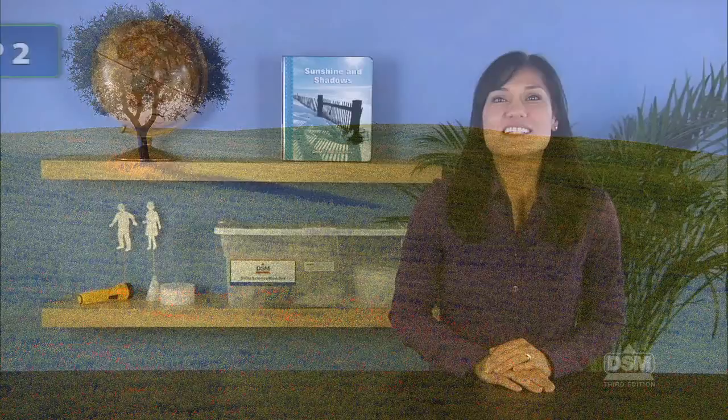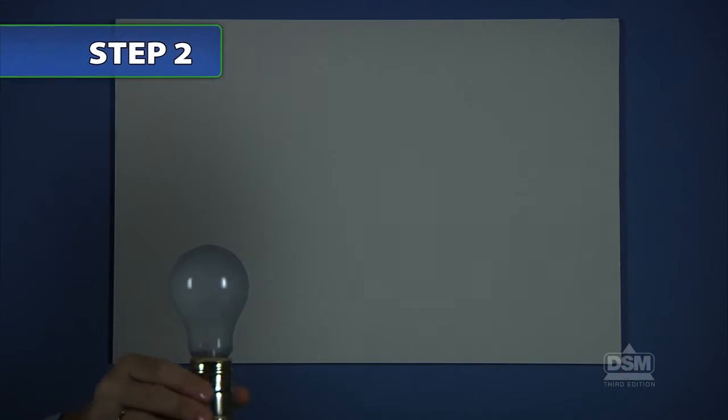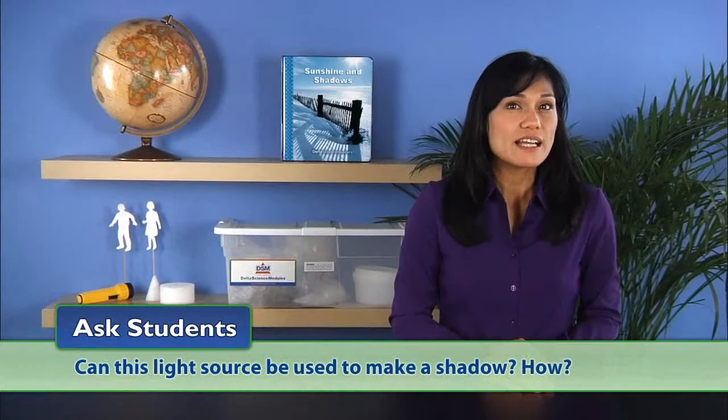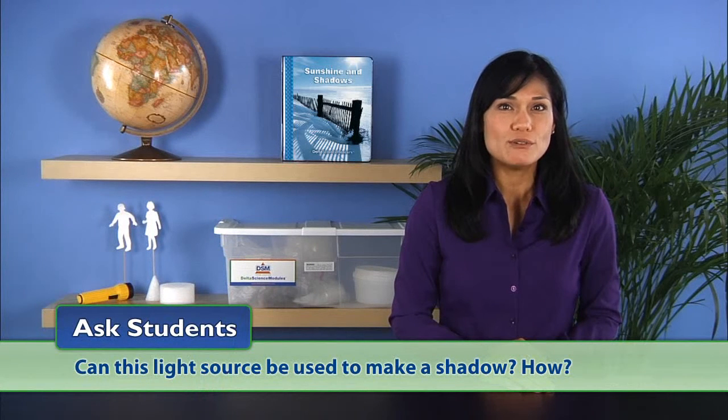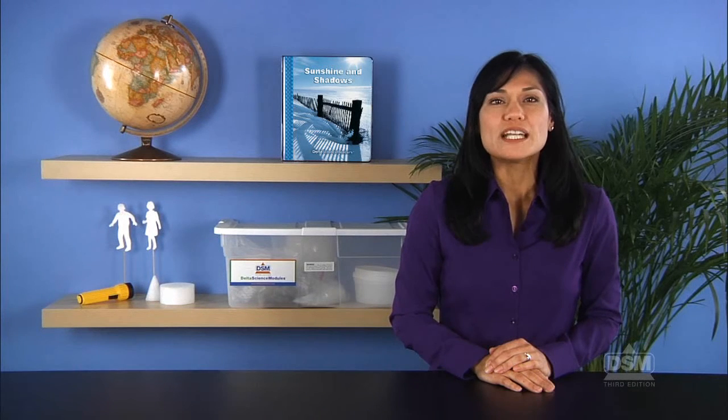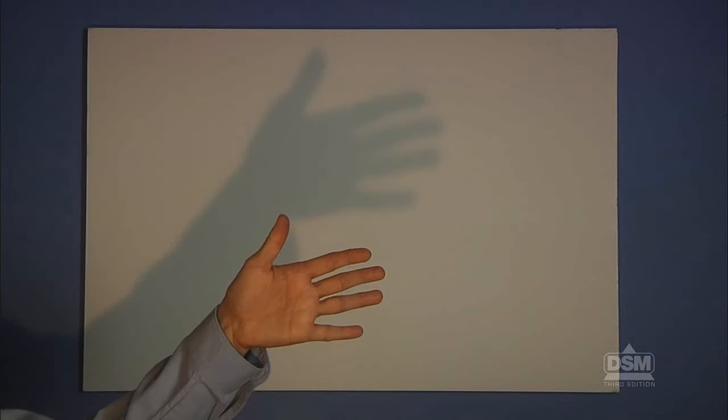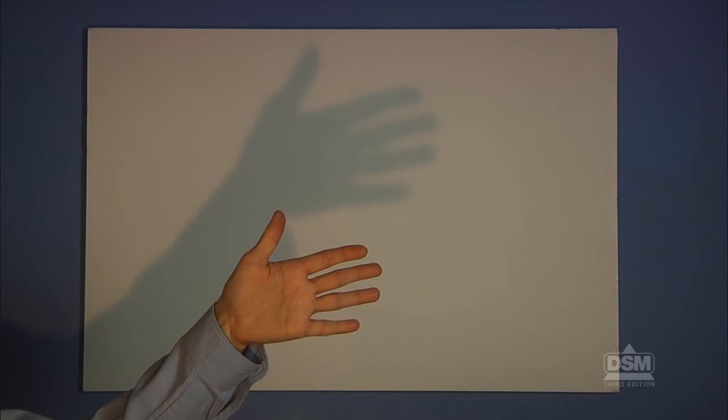Next, shine the light from one of the lamps onto the wall. Ask students, can this light source be used to make a shadow? How? Demonstrate this by darkening the room and having a volunteer hold his or her hand between the light and the wall. The student should be able to identify the hand's shadow.